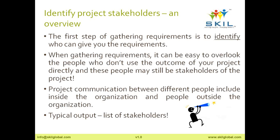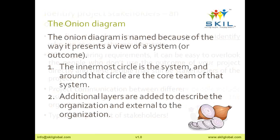Let's take a look at the onion diagram technique itself. The name comes from the way it is presented — the view of a system. If you look at an onion, it is structured in layers. For stakeholder identification, we will use an onion diagram, which means we will cut it in layers, and some stakeholders will belong to each of these layers.